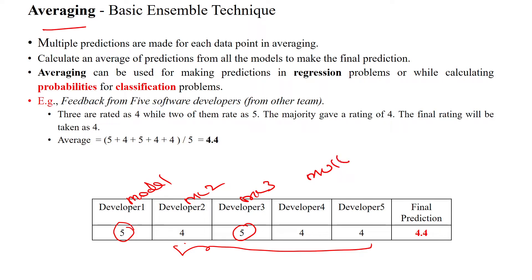Ensemble technique means multiple models combined together. Here, the output of all models is averaged to get the final prediction. We are not omitting any model — we use all model outputs to take the average.